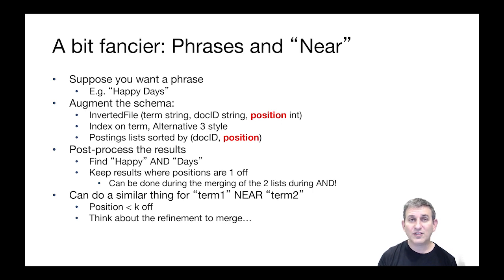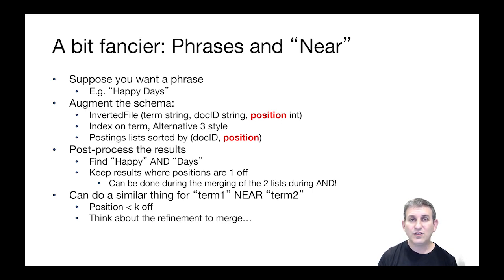This means that for every occurrence of a term — maybe it's a common term — we'll have multiple positions at which it occurs in the document. We're going to still do the index on term in an alternative three style, but our postings list at the bottom of the index is going to be sorted by doc ID comma position, so that multiple occurrences of the term are sorted by document ID, and then multiple occurrences in a single document are sorted by position.